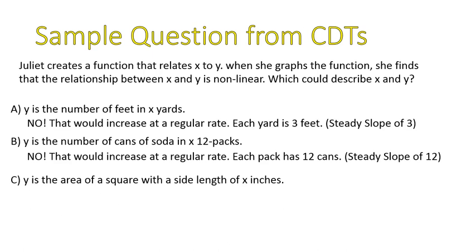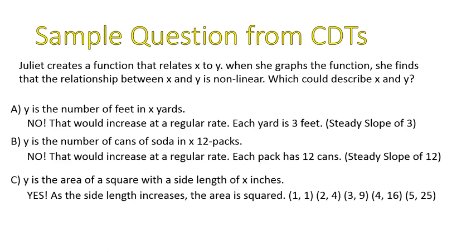How about this one? Why is the area of a square with a side length of x inches? This is our nonlinear equation right here. As the side length increases, the area is squared. So I just put some points up there. The side length starts at 1, the area would be 1. The side length is 2, the area would be 4. The side length is 3, the area would be 9. 4, 16, 5, 25. Notice this is not linear. It's not increasing steadily. It's increasing what we call exponentially. It is squaring every time the side length increases by 1. It's not a steady rate of change. Therefore, this one is our nonlinear equation.